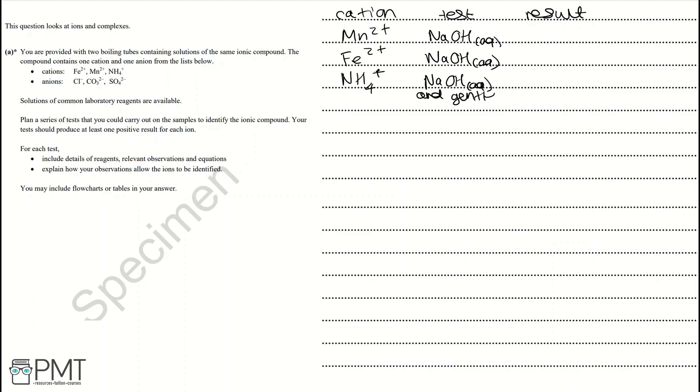Now let's look at the results for each of these cations with the tests we're using here. Mn²⁺ will result in a pink precipitate. Fe²⁺ will result in a green precipitate. And NH₄⁺, if you hold litmus paper over the boiling tube, the litmus paper would then turn blue.